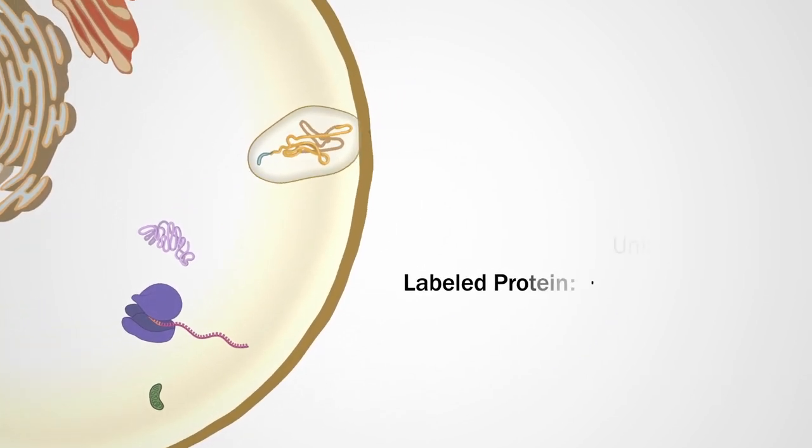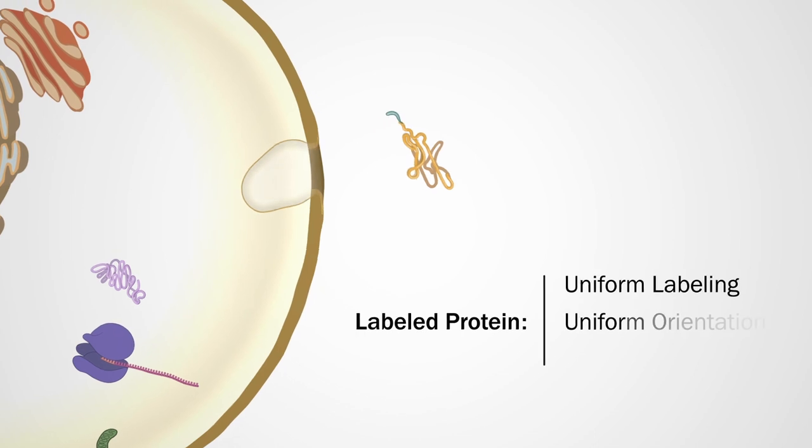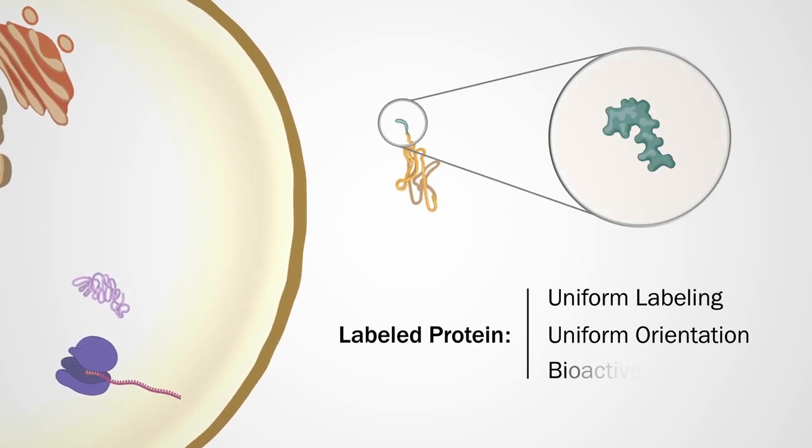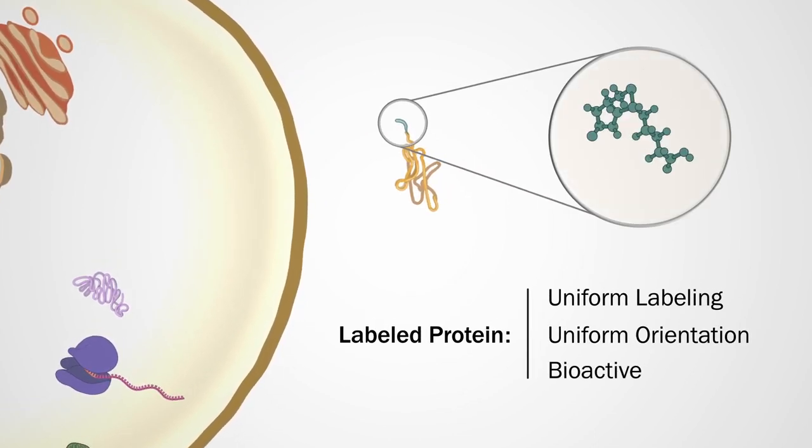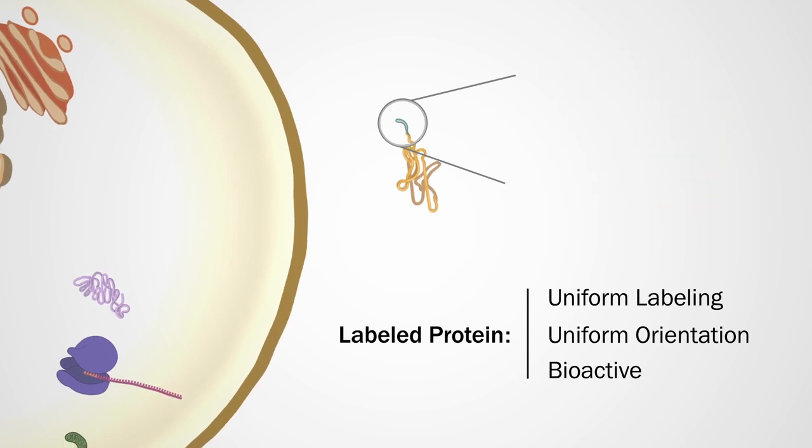Site-specific labeling allows for uniform protein orientation when binding to a streptavidin surface. Restricting biotinylation to the aviTag means that the protein is left mostly unchanged and potential binding sites remain available.